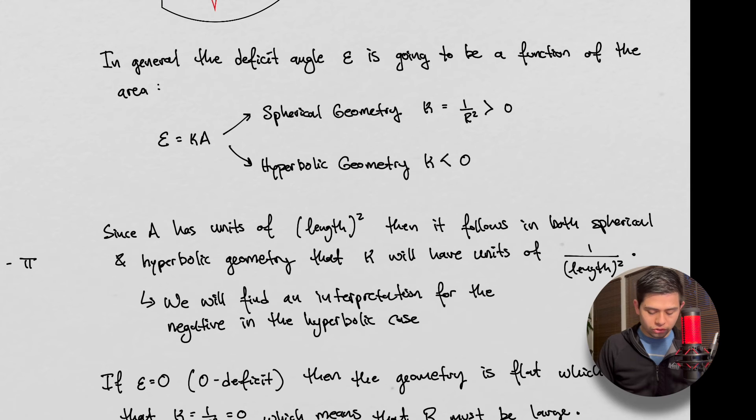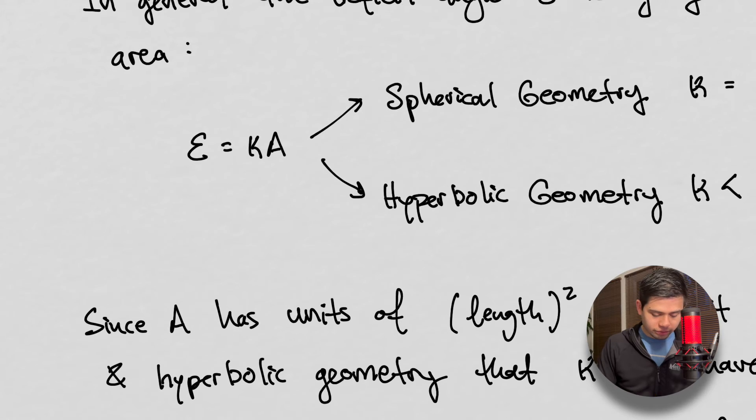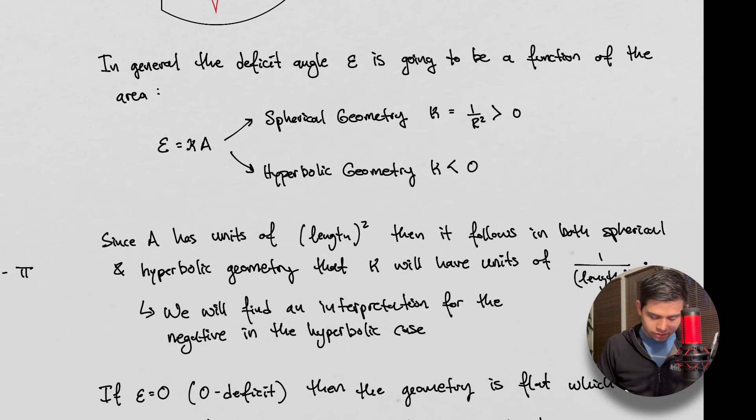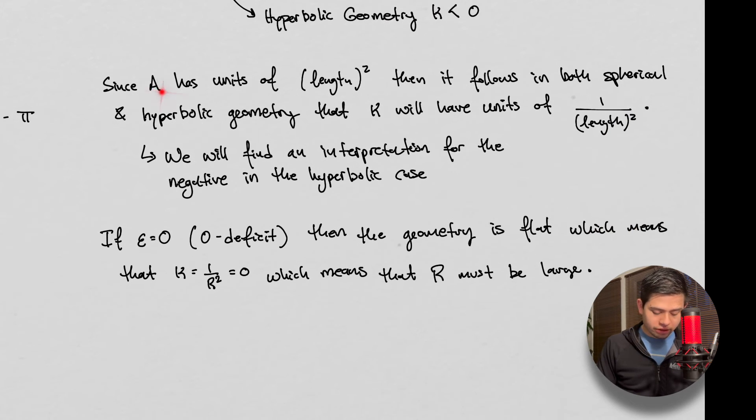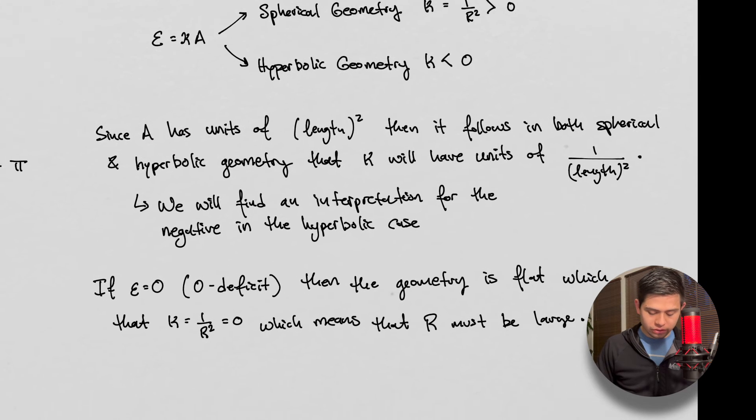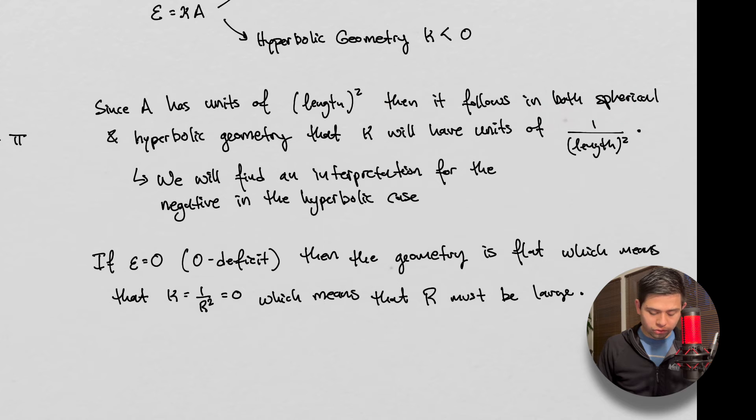And the general, so this is the formula we have now. And we're saying that in spherical geometry, this K, or this kappa, I'll write kappa instead. This kappa is, in spherical geometry, going to be, as what we see now, is one over r squared, which is greater than zero. And in the hyperbolic geometry, this is going to be smaller than zero. So since the area here has the units of length squared, then it follows that in both spherical and hyperbolic geometry, that κ is going to have units of one over length squared.